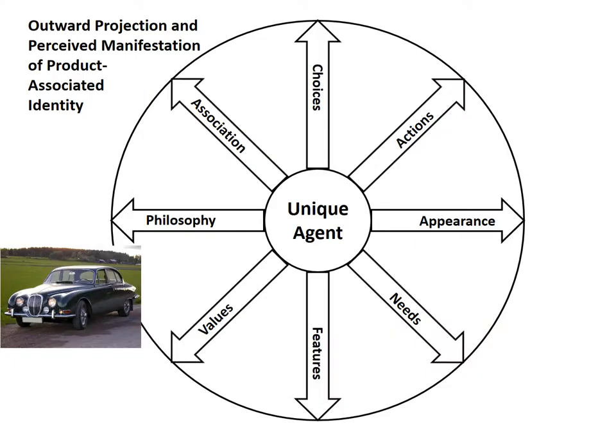So, let's use a car here. And let's use the same matrix that we used for the goldfish. Can we call a car a unique agent? Actually, we cannot. Because the car isn't really unique. And it's not an agent either because it isn't making any of these choices. So, but what it is though, it is an outward projection which leads to a perception of a manifestation of an identity that we associate with a product.